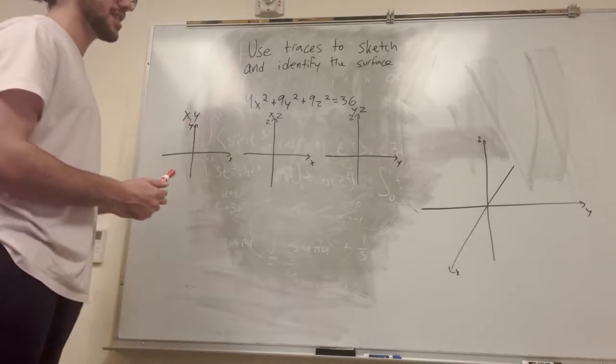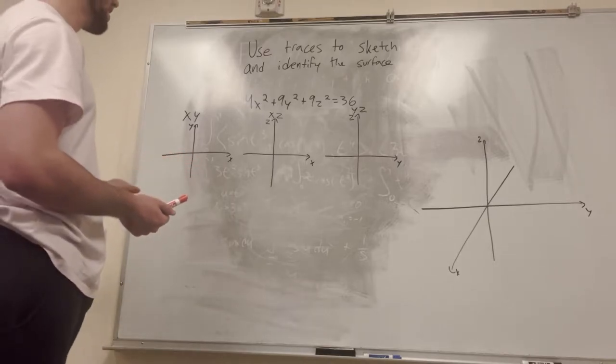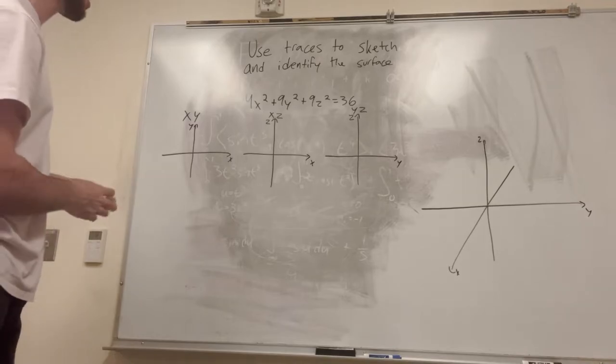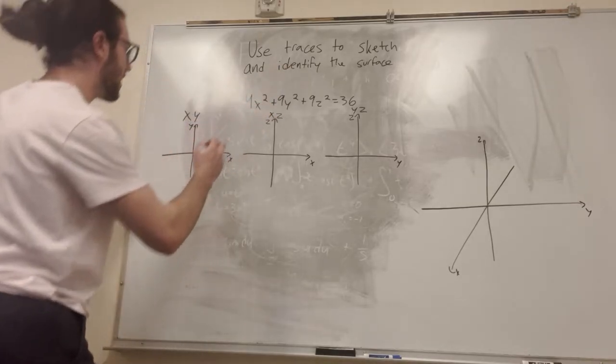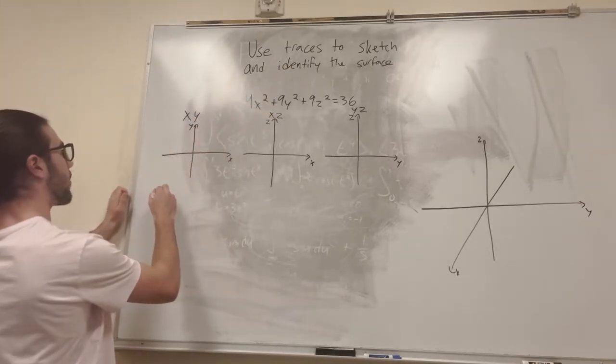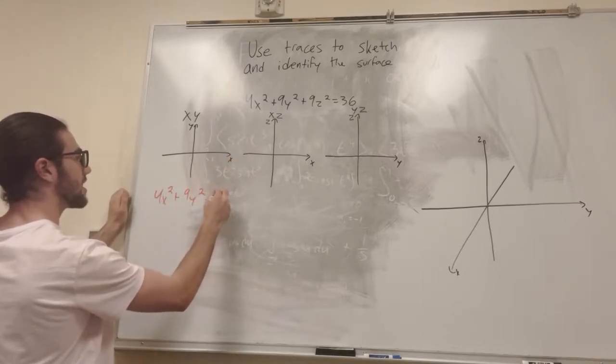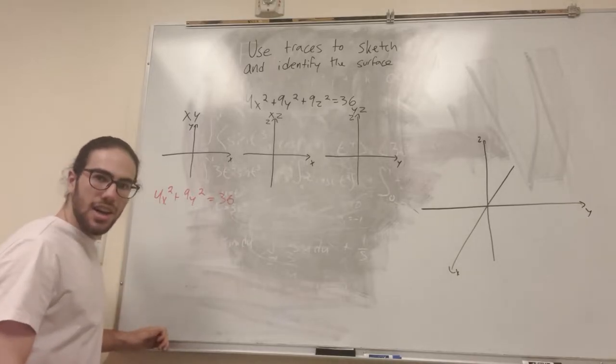So what do we know about the xy plane? Well, z equals 0 on the xy plane, right? Because it's just where x and y have any values, but that's where z equals 0. So we can even rewrite this equation: 4x squared plus 9y squared plus 0 equals 36. Alright, pretty cool.